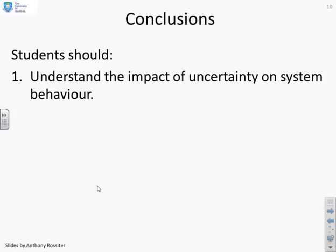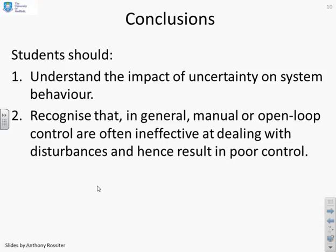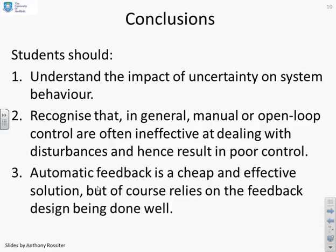So in conclusions, students should understand the impact of uncertainty on system behavior and recognize that in general manual or open loop control are often ineffective at dealing with disturbances and hence result in poor control. And automatic feedback is a cheap and effective solution. But of course it relies on the feedback design being done well.